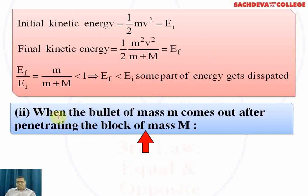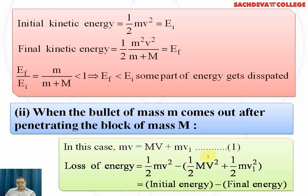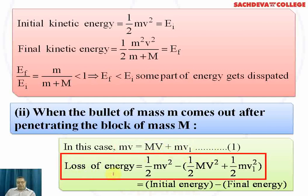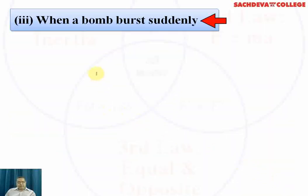When a bullet of mass m comes out after penetrating a block of mass M, the momentum equation is: mv = MV + mv1. The loss of kinetic energy is: (1/2)mv² minus [(1/2)MV² + (1/2)mv1²], that is, initial energy minus final energy.